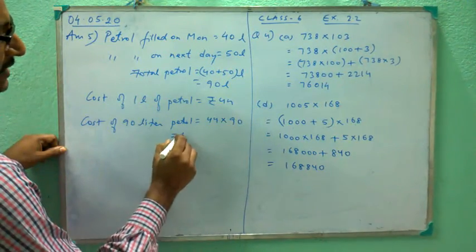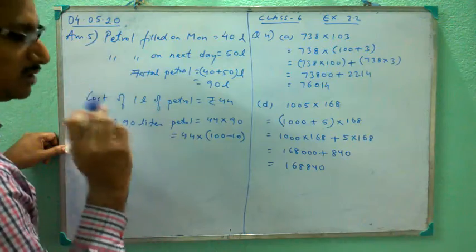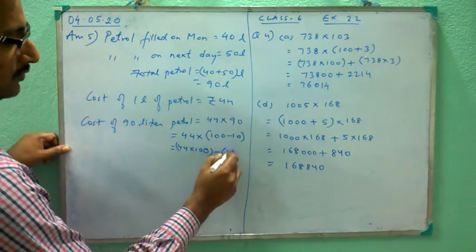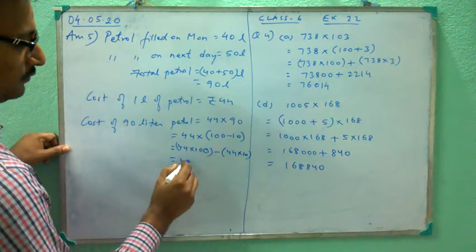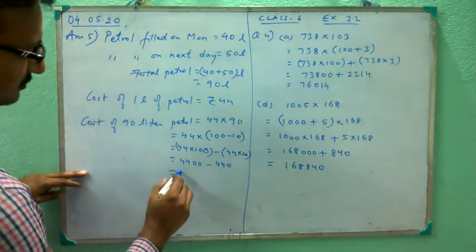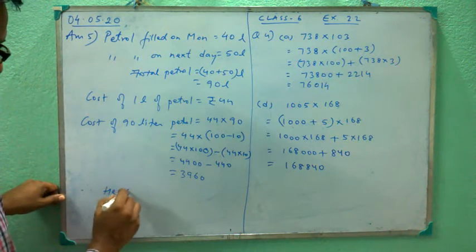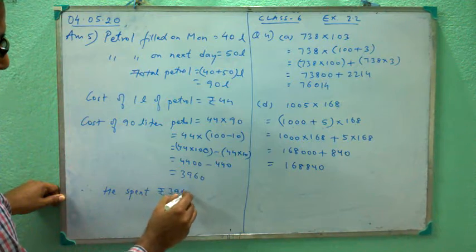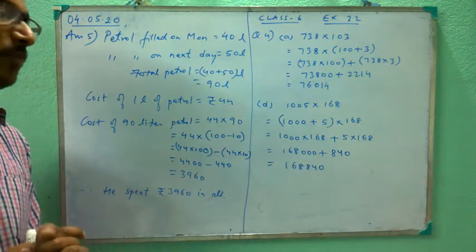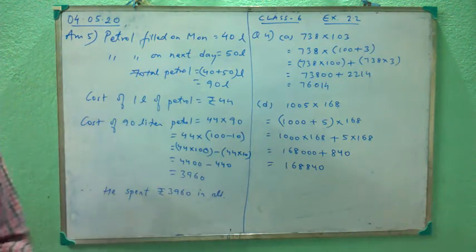Cost of 90 litres equals 44 into 90. For easier calculation we will use distributive property. 90 can be written as 100 minus 10. So 44 multiplied by 100 is 4400 minus 44 into 10 which is 440. After subtracting you get 3960. Therefore he spent rupees 3960 in all.